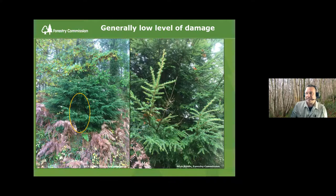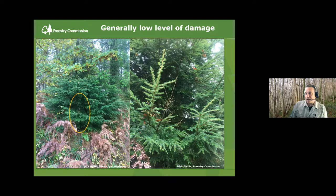It must be said that generally at these sites the level of damage has been quite low, and almost always adjacent to roads, watercourses or some corridor. This example shows an otherwise perfectly healthy-looking bit of western hemlock regeneration adjacent to a forest road, with one single branch showing dieback — subsequently proven positive for Phytophthora pluvialis. It's important to bear this in mind because many of the symptoms are extremely subtle and may have otherwise gone unnoticed if we weren't specifically going out looking for it.